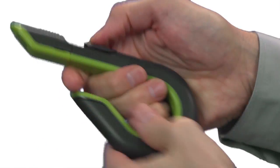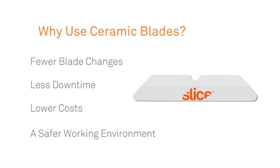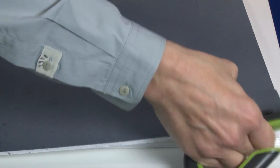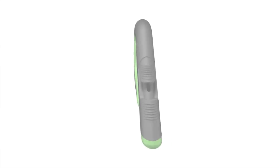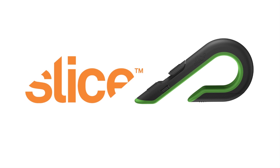While using Slice Ceramic Blades instead of traditional metal blades, you'll have fewer blade changes, less downtime, lower costs, and most importantly, a safer working environment. The Slice 10503 Auto-Retractable Box Cutter is a safer, more effective way to open corrugated cardboard. Let us know how you're using it. Thank you.